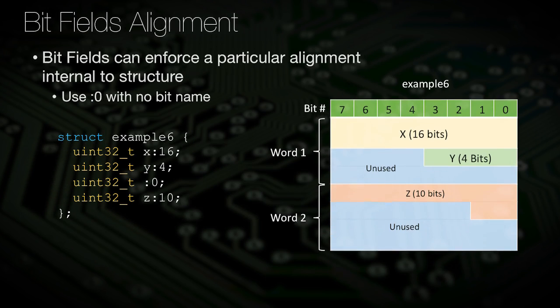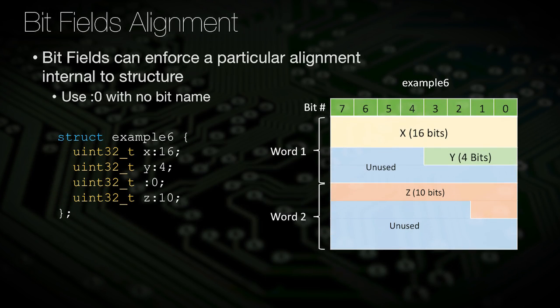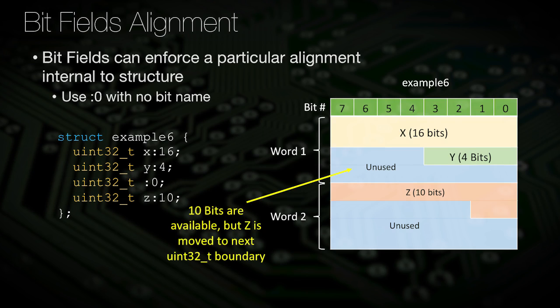Bitfields can also be directly added to enforce a particular alignment on the next member. This can be done by adding a bitfield of length zero with no name. This means the next member will be aligned to the next available memory region. You would use this as a way to help ensure a specific bit orientation or mapping.